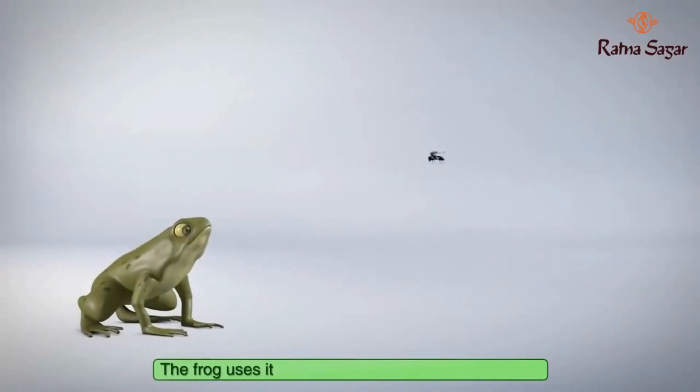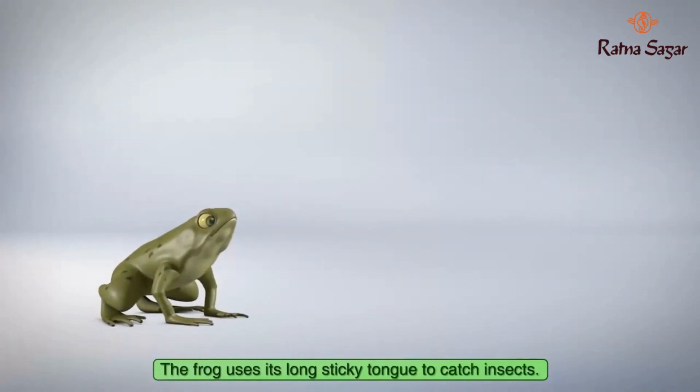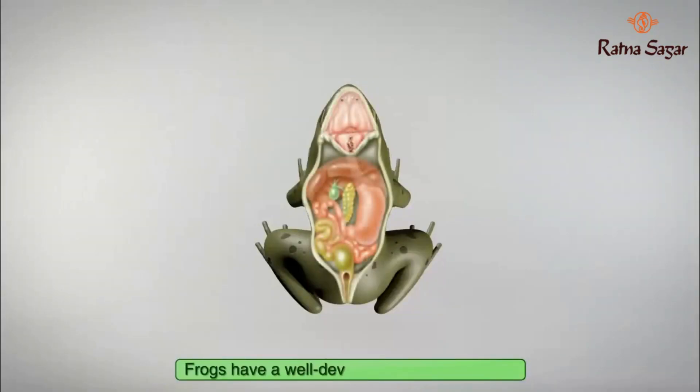The frog uses its long sticky tongue to catch insects. Frogs have a well developed digestive system in which food is digested with the help of digestive juices.